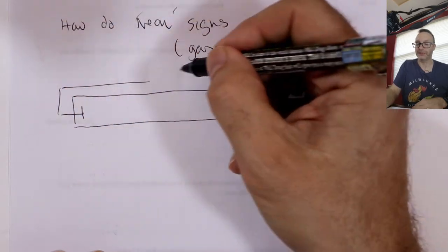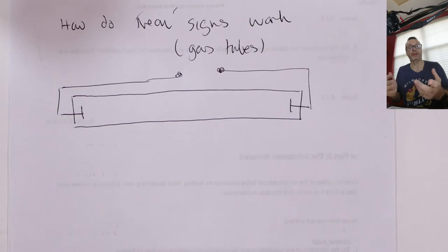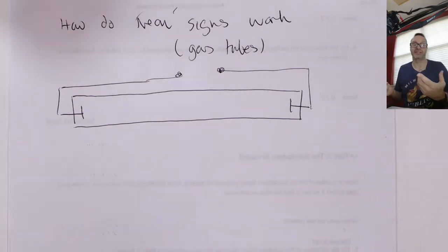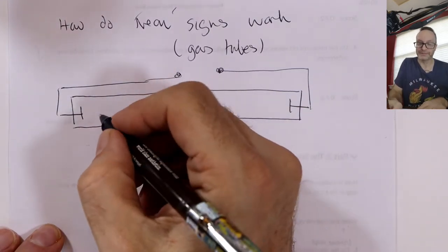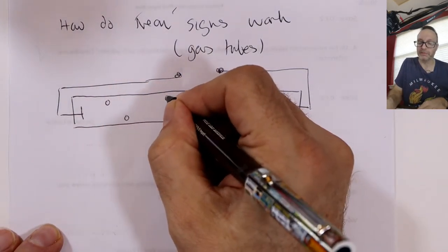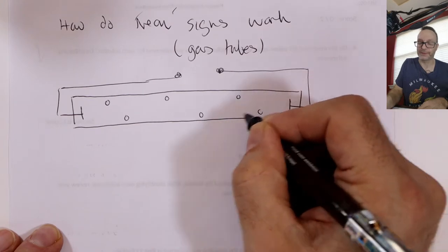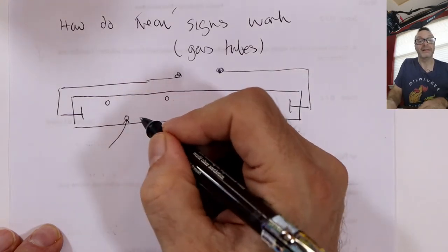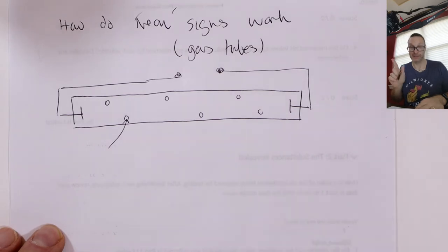You turn this thing on and light comes out — so it'd be a Budweiser sign or the fluorescent lamp in your kitchen. How does it work? Well, inside we have a low-pressure gas, and the identity of the gas gives you a certain color light.